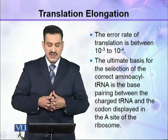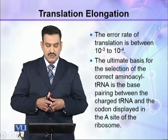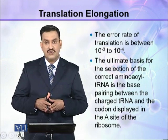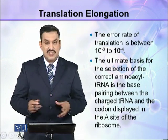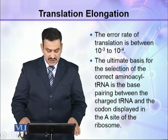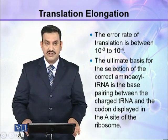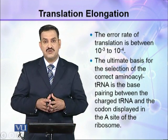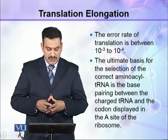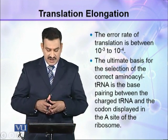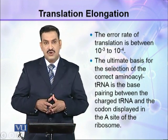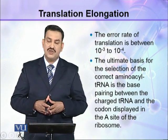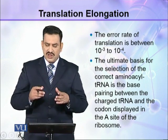The error rate of translation is between 10⁻³ and 10⁻⁴. The ultimate basis for the selection of the correct aminoacyl tRNA is the base pairing between the charged tRNA and the codon displayed in the A-site of the ribosome.